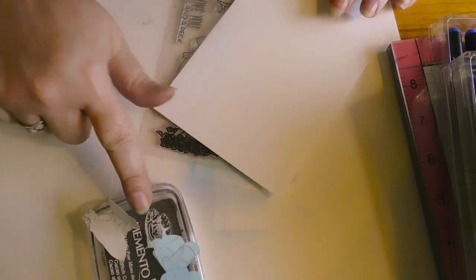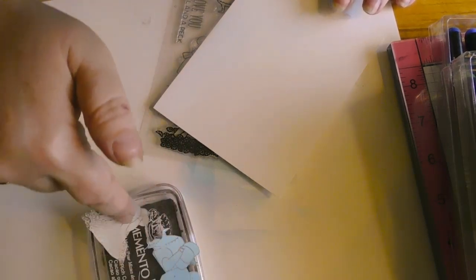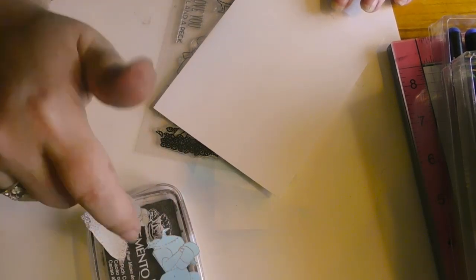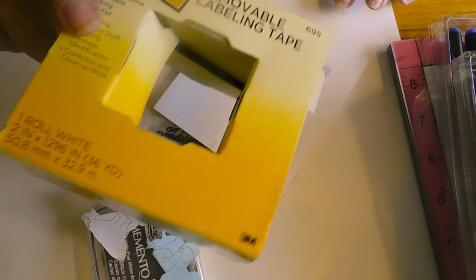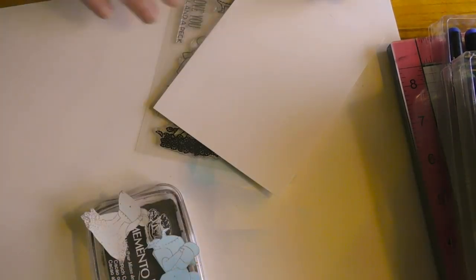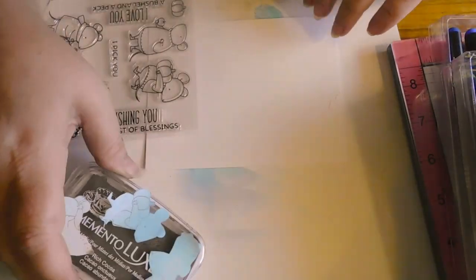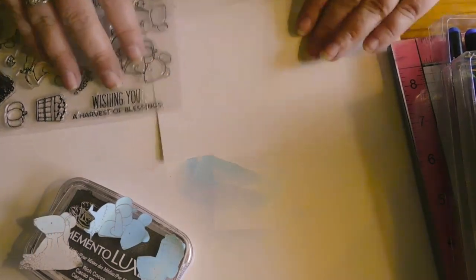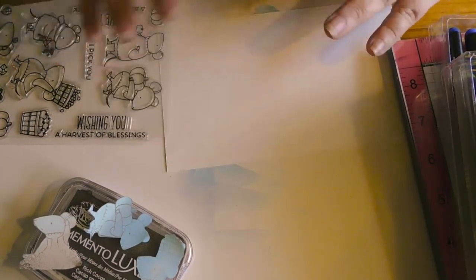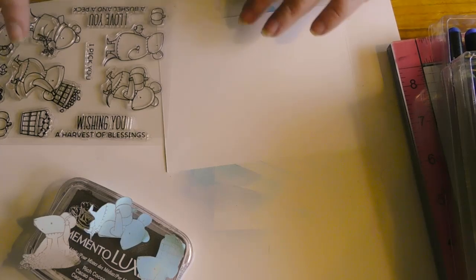Also, before I got started, I went ahead and stamped out my three mice that I'm going to be using and stamped them onto some post-it removable tape so that I can mask those out. So I just stamped them out on the tape and fussy cut them out. And they are no way precise and perfect, but it's enough that gets the job done.